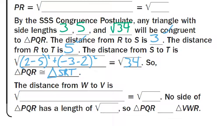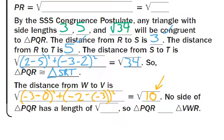Moving along, find the distance from W to V. Hopefully everyone got the square root of 10 for segment WV. Since no side of triangle PQR is the square root of 10 units long, there's no need to check the other two sides — all three have to be congruent, and as soon as we get one that doesn't match up, we're done. So triangle PQR is not congruent to triangle VWR.